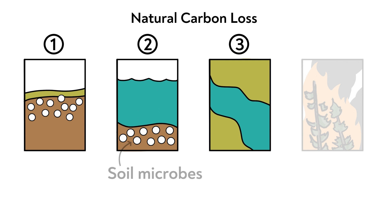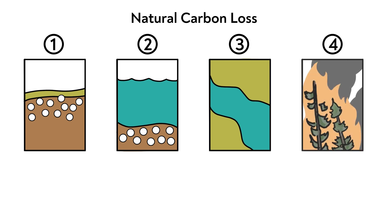Another way carbon is lost from wetlands is when water flows through these systems, dissolved forms of carbon can be exported in and out of the wetland. Lastly, when certain types of wetlands burn during wildfires, particulate carbon or soot can be lost from the ecosystem.